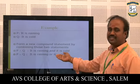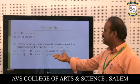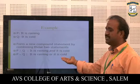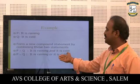The next connective is disjunction, represented as P or Q. For example: 'It is raining or it is cold.' This is an example of disjunction.